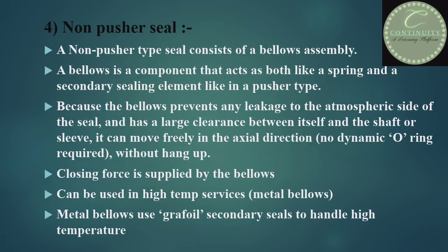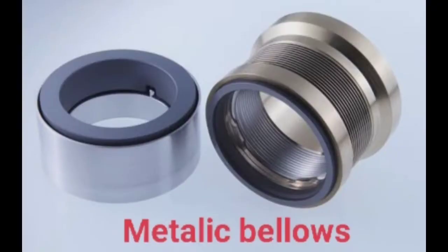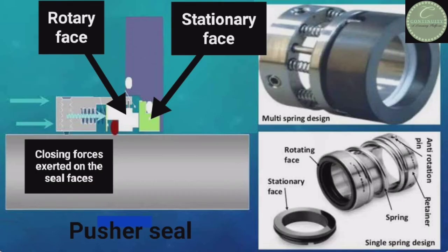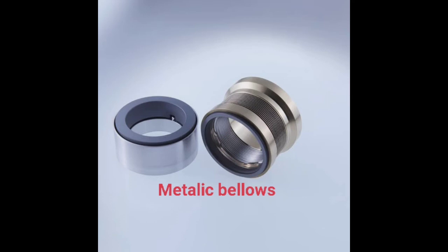Now for the next type of mechanical seal: the non-pusher seal. A non-pusher seal has a bellows assembly. A bellows is a component that acts as both a spring and a secondary sealing element simultaneously — like combining both functions found separately in a pusher type seal.